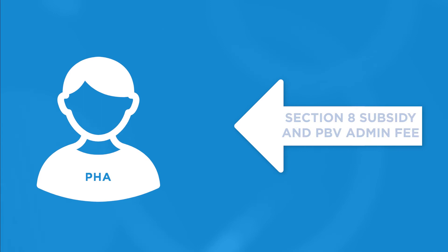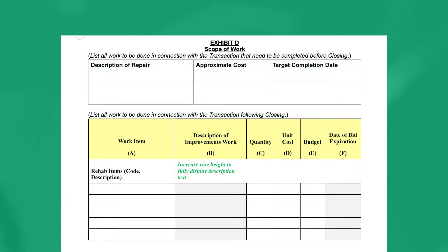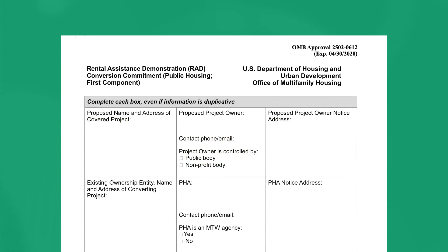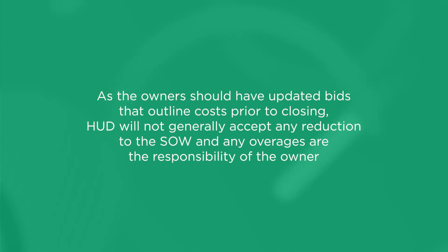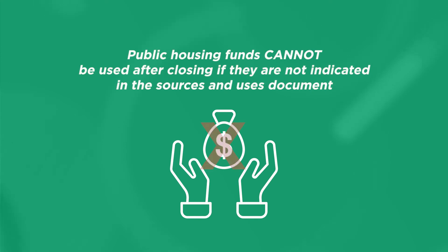PHAs will begin receiving the Section 8 subsidy and PBV admin fee at the start of the calendar year following conversion. The RAD scope of work, or SOW, is included in the RAD conversion commitment and contains the full list of repairs to be completed following closing. Work should begin as soon as possible after closing. HUD will not generally accept any reduction to the SOW, and any overages are the responsibility of the owner. Public housing funds cannot be used after closing if they are not indicated in the Sources and Uses document.